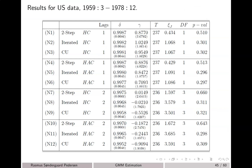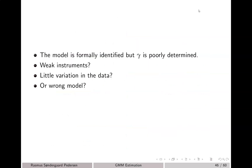What we see is that no matter what choice of estimation approach, no matter what type of weight matrix, and no matter what lag order of the instruments we choose, we get essentially that the discount factor is very close to 1 and the coefficient of relative risk aversion gamma is all over the place, estimated very imprecisely. We also note that the Hansen test for over-identification is not rejected in any of the settings, suggesting that the moment conditions are valid.